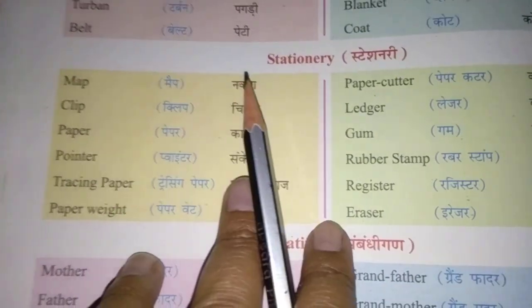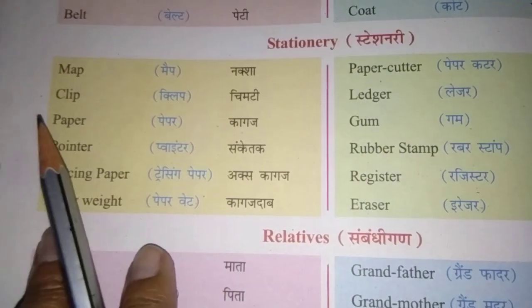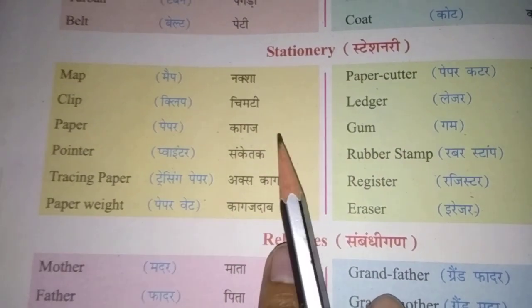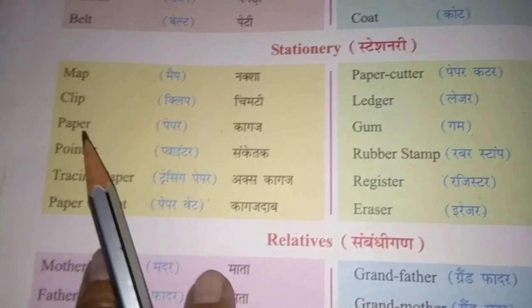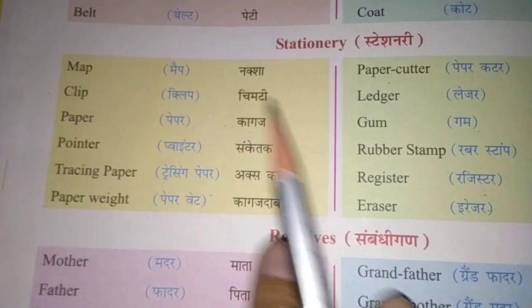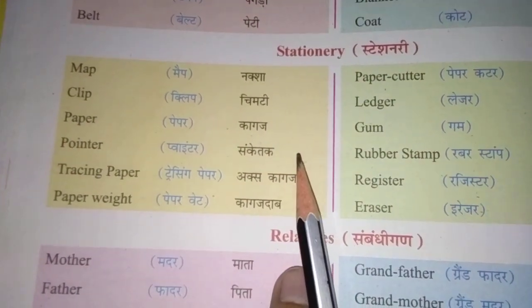Map, nakshah. Clip, chimti. Paper, kagas.